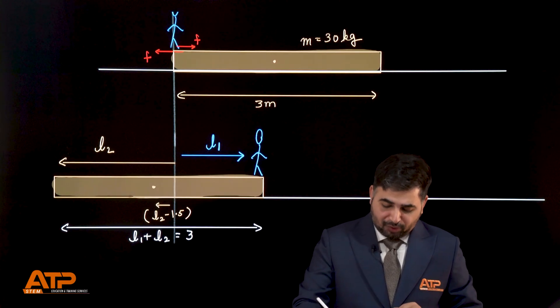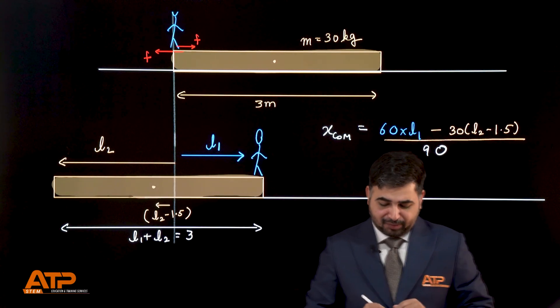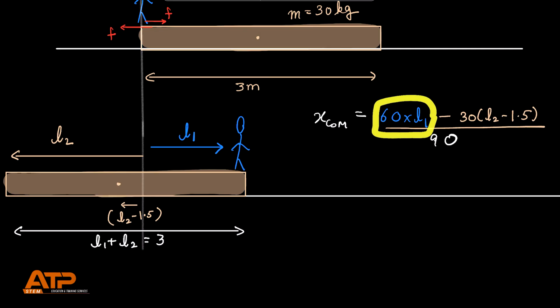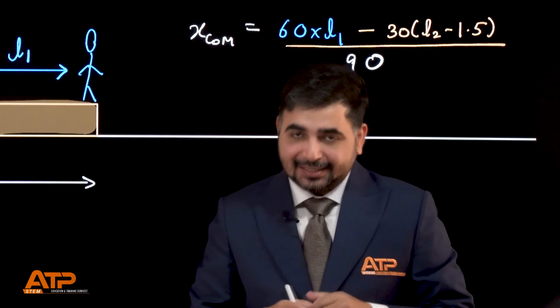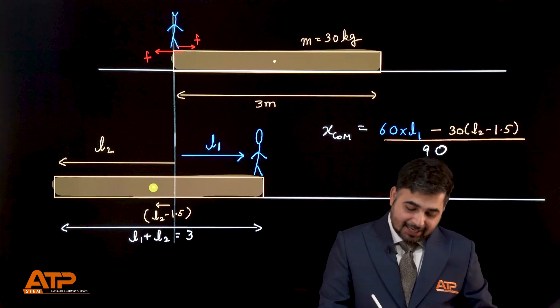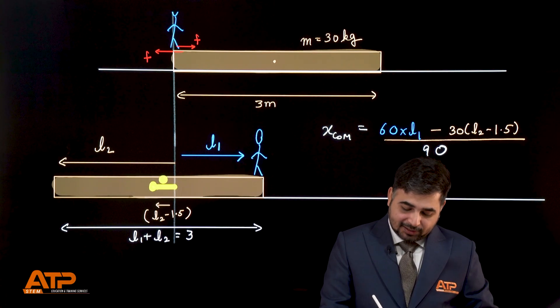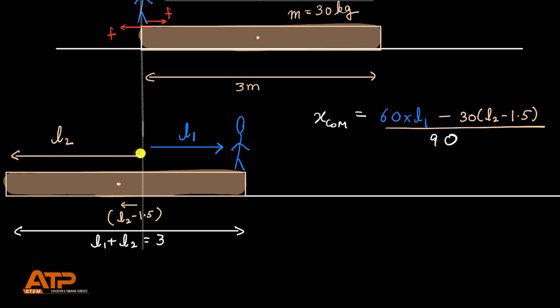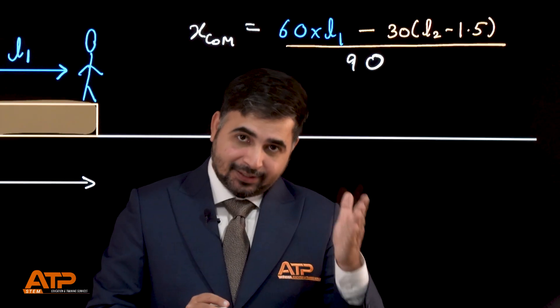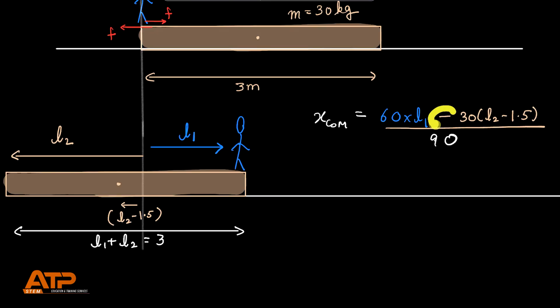Now, while using the new formula or the new location of center of mass, we are going to use 60 into L1 because the distance of the person is now L1 distance to the right. Where is the center of mass of the plank though? That is here. How much is this distance from the origin? It is this distance L2 minus half length, L2 minus 1.5 and since it is on the left hand side, it's going to be a negative sign. Minus 30(L2 minus 1.5) divided by 90.